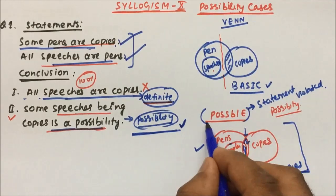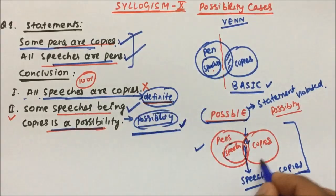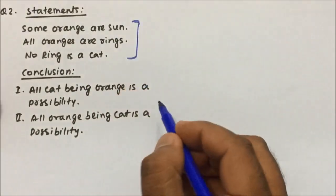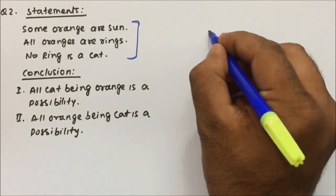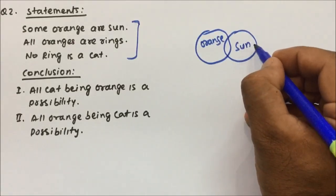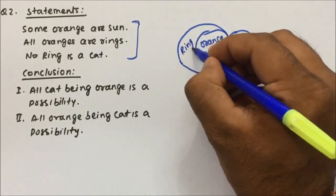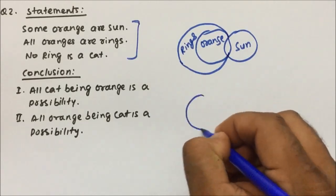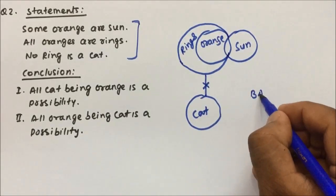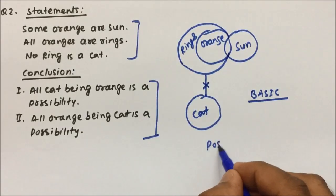So conclusion one was false and conclusion two is true, because we found a possibility in the possible diagram. Now question number two: a statement is given followed by two conclusions. Let's draw the diagram — some oranges are suns, all oranges are rings, and no ring is a cat. So there is no relation between ring and cat. This is the basic diagram, and if we cannot conclude anything from it, we go to the possible diagram.